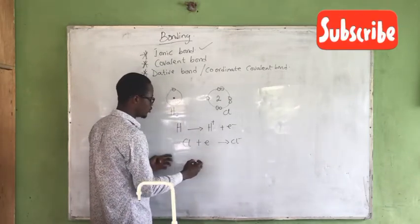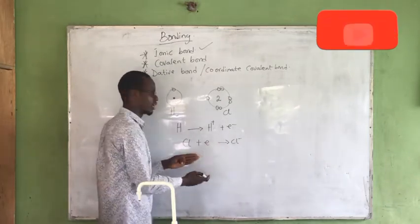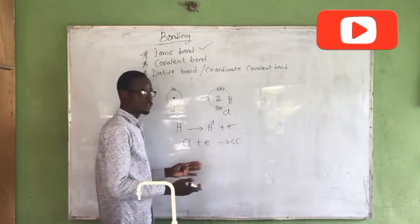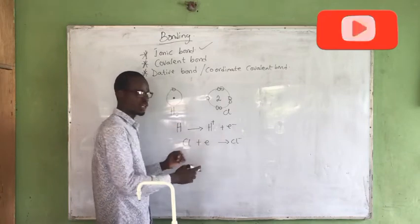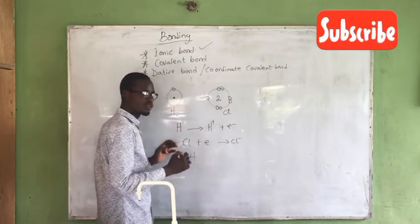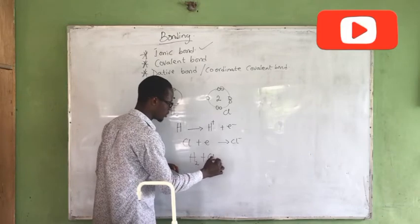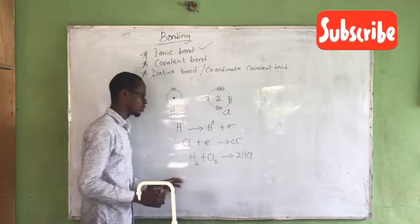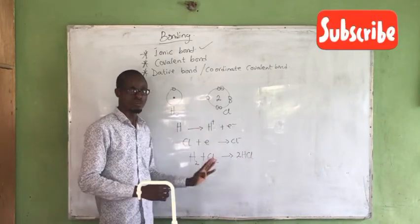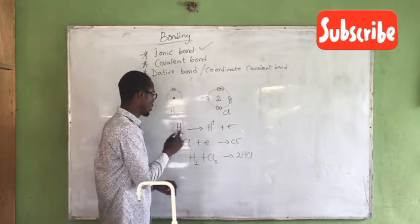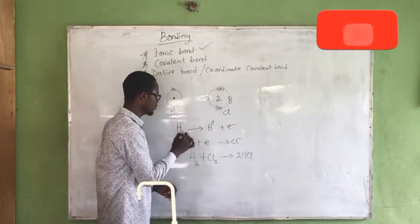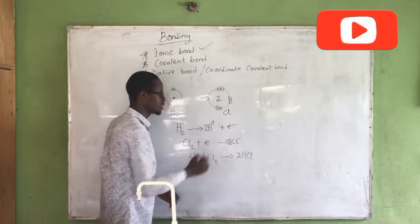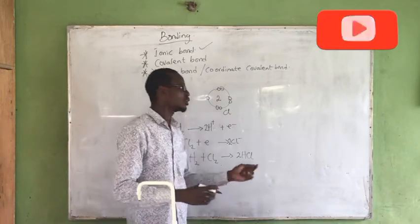When we join these two half reactions together — one is oxidation and the other is reduction — we have H₂ plus Cl₂ giving 2HCl. We can also balance the two half reactions: 2H gives 2H⁺, and Cl₂ gives 2Cl⁻. So that is the ionic bond.